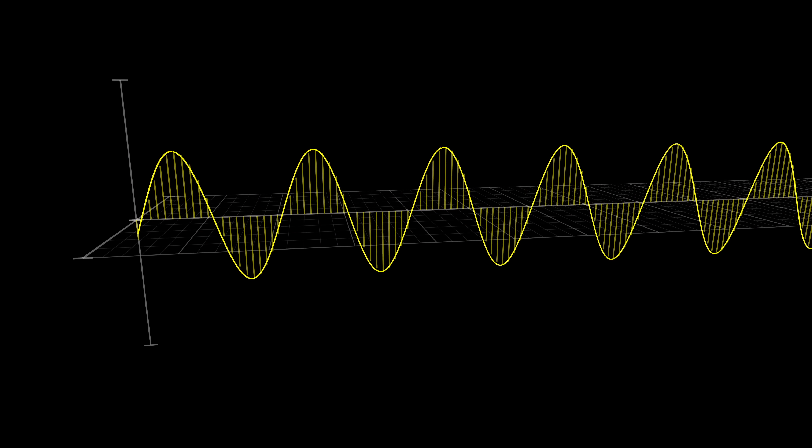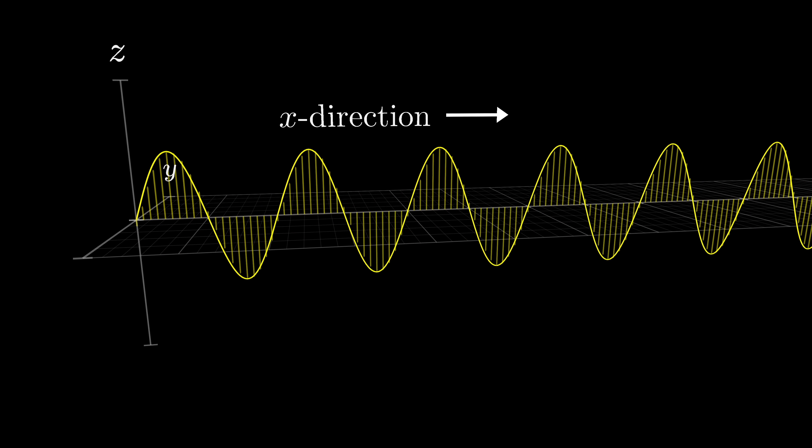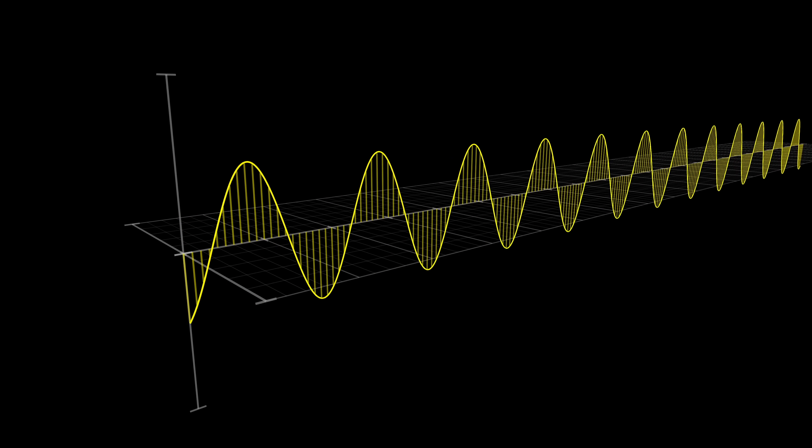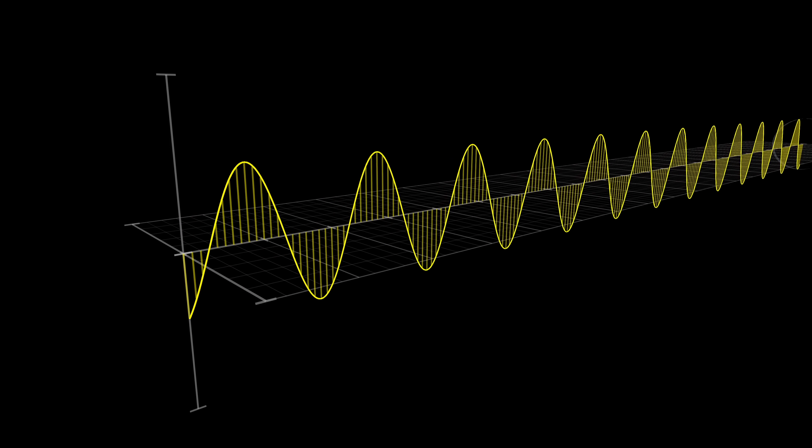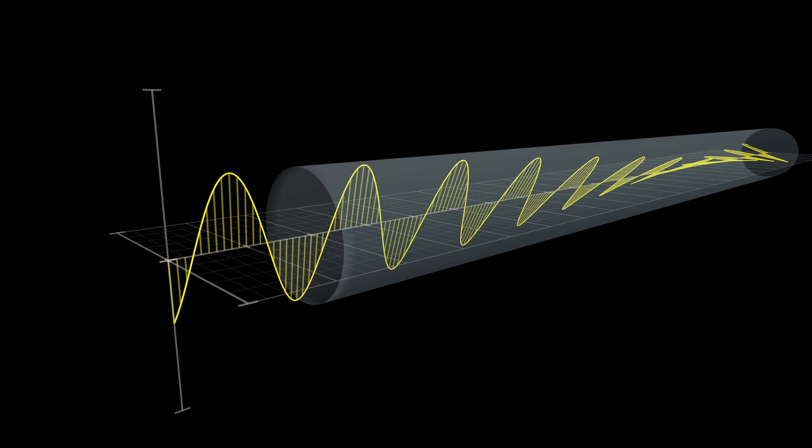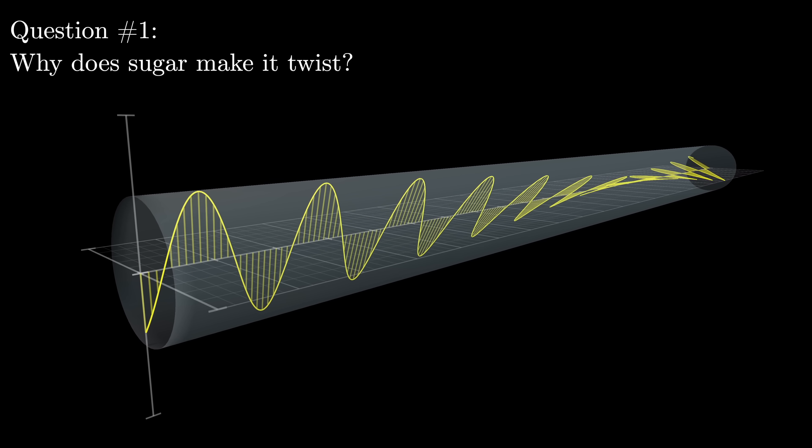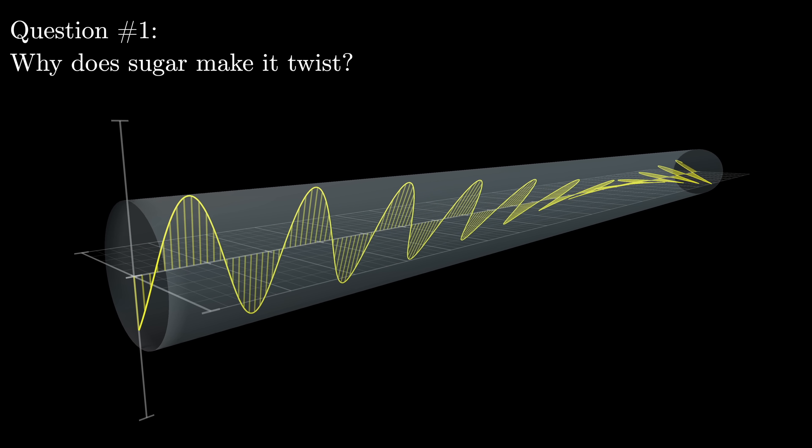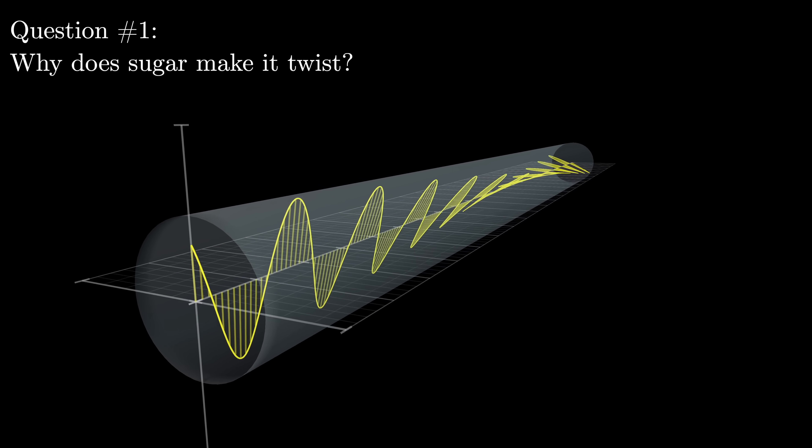Postponing that for the moment, we'll just say if we think about it as propagating in one direction, say along an x-axis, the wiggling happens perpendicular to that, say in the z direction. What's going on when it passes through this tube of sugar water is that that wiggling direction gets twisted. And so the first key question is why? What is it about interaction with sugar that causes this twist?